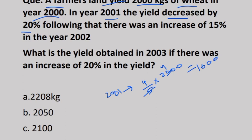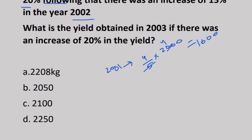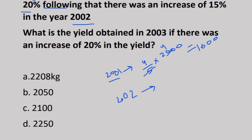In 2001 he had 1600 kg. Now read the further question: there was an increase of 15% in 2002. So in 2002, the 15% increment is on the 2001 production, not the 2000 production. 15% increment means 115 divided by 100, which you can write as 23/20 times 1600. This equals 1840 kg in 2002.